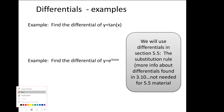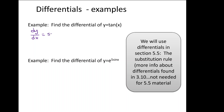Let's calculate some differentials. We find the differential of y equals tan of x. Taking the derivative of both sides using dy by dx notation: dy by dx equals secant squared of x. Then we cross multiply by dx, treating it like a fraction. So dy equals secant squared of x times dx. That's our answer — we just take derivatives using dy by dx notation and then cross multiply.